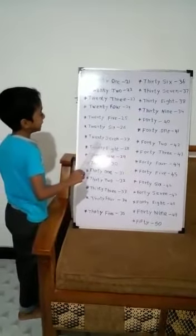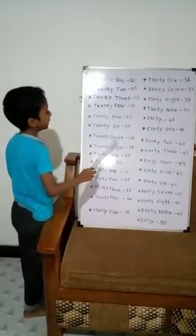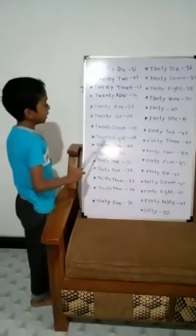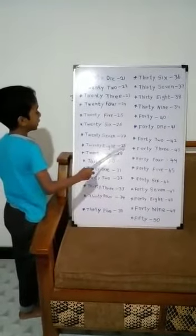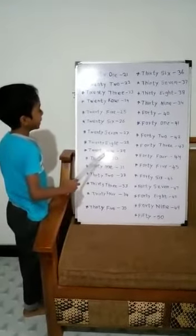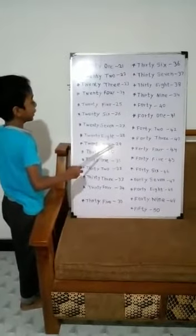Twenty, seven, 27. Twenty, eight, 28. Twenty, nine, 29.